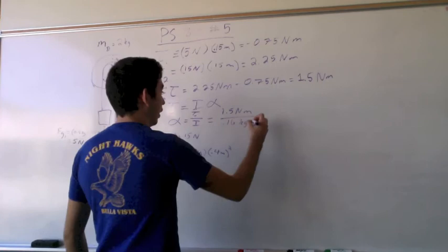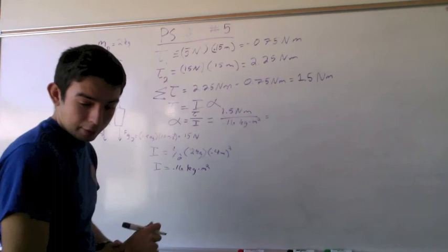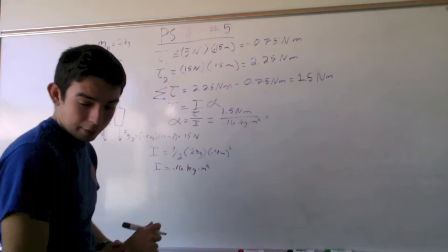You could do the units if you'd like, they would cancel out and leave you with 9.4 per second squared, which is just going to be radians per second squared. Really great. Thank you.